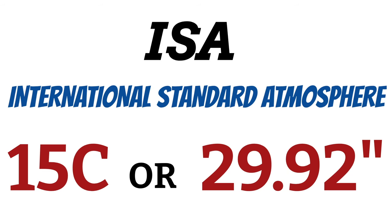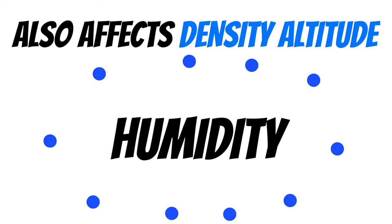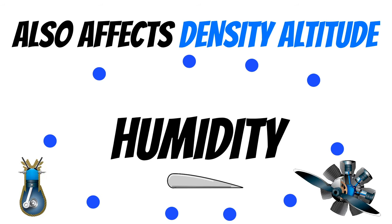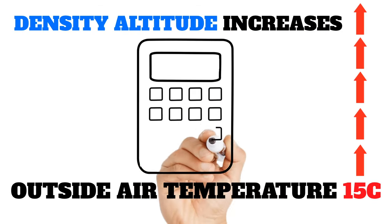There is one other thing that affects density altitude, and that's humidity. Humidity also pushes those air molecules farther apart, which decreases the performance of our engine, wings, and propeller, just like hotter air temperatures. Humidity is one of the four things that affects airplane performance, but we don't typically calculate that because the calculations start to get way too complicated. And it doesn't affect performance quite as much as the other three factors, but it's definitely something you want to consider.